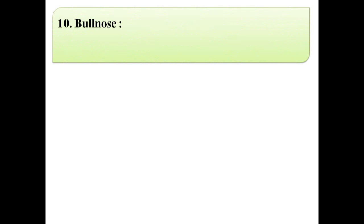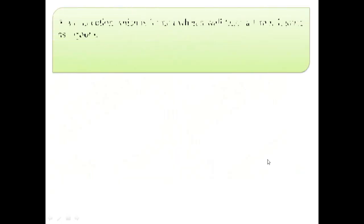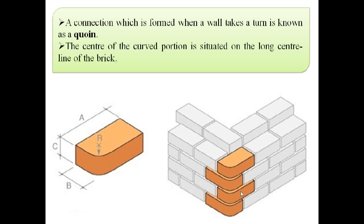The next term is bullnose. A bullnose is a brick moulded with a rounded angle, as shown in this image, and it is used for rounded quoins. In this image we can see the double bullnose and the single bullnose. A connection which is formed when a wall takes a turn is known as a quoin. Bullnoses are provided at quoins, and the centre of the curved portion is situated on the long centre line of the brick.